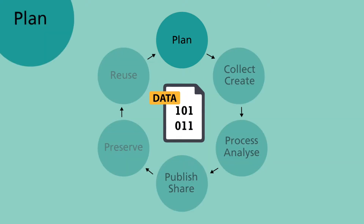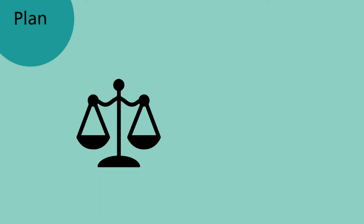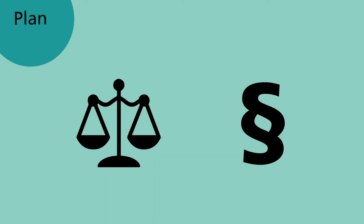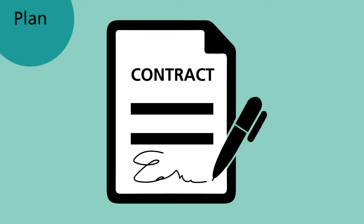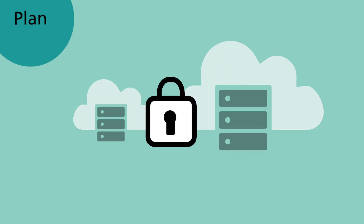In the planning phase you need to consider how you will work with your data in a responsible way throughout your research project. Some of the questions you need to clarify: Will you deal with personal data? Will there be possible ethical or legal issues regarding data collection? Do you need to set up an agreement with a data provider? What is the expected size of your data? How will you keep your data safe?